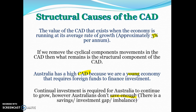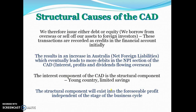There's an imbalance between national investment and national savings. When a business wants to take out a loan from an Australian bank, that bank needs to borrow from overseas because there's not enough savings in Australia — the money can't just come out of thin air. So the structural CAD is related to the fact that we have a young economy that requires a lot of funds from overseas in order to invest and build new infrastructure.